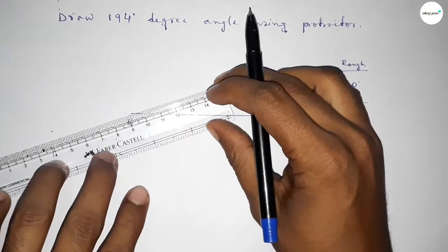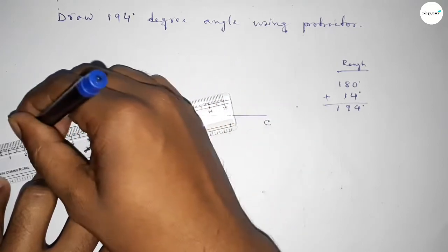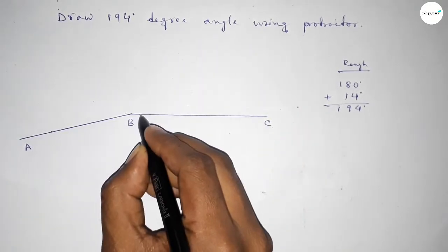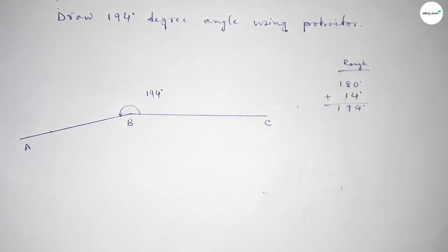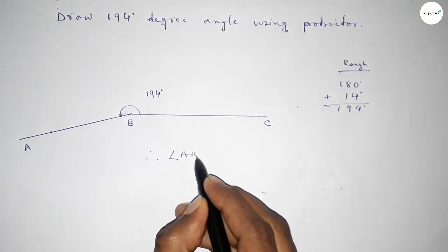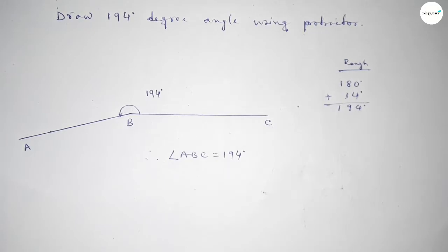Joining this line and taking point A here. So angle ABC, this is a 194-degree angle. Therefore, angle ABC equals 194-degree angle. That's all, thanks for watching, please share it.